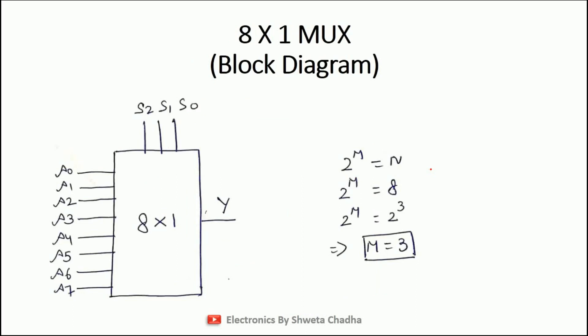The next example is the 8 cross 1 multiplexer. In 8 cross 1, there are a total of 8 input signals starting from A0 to A7, and one output signal Y. Using the same formula, the total number of select lines comes out to be 3: that is S2, S1, S0. This is the block diagram of the 8 cross 1 multiplexer.